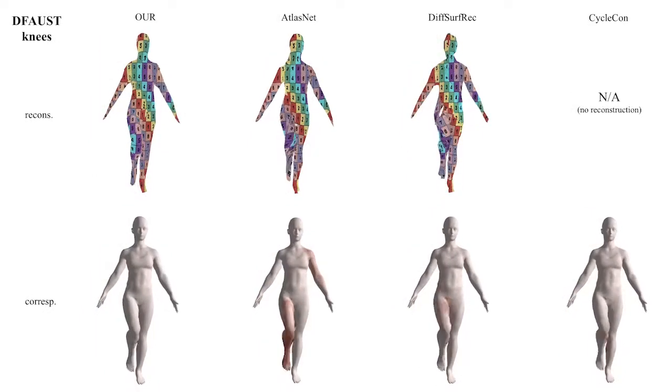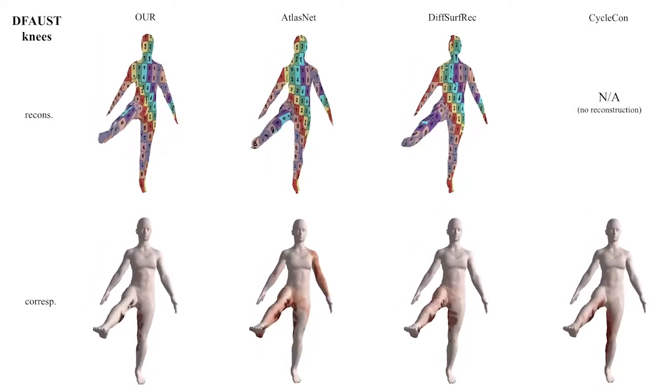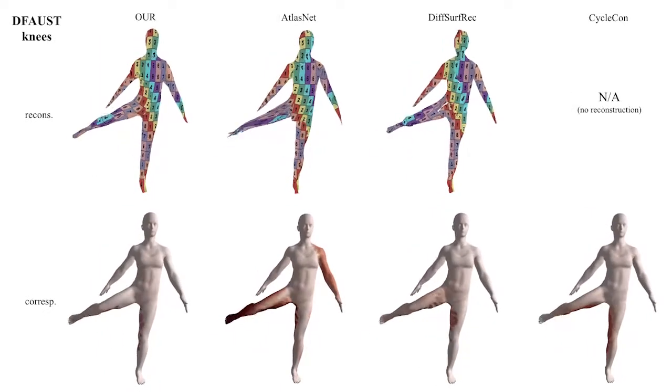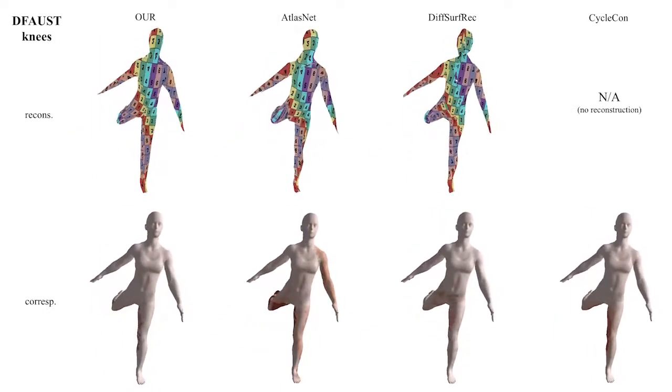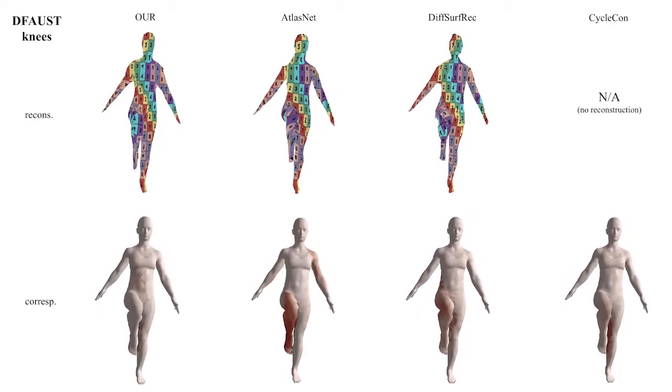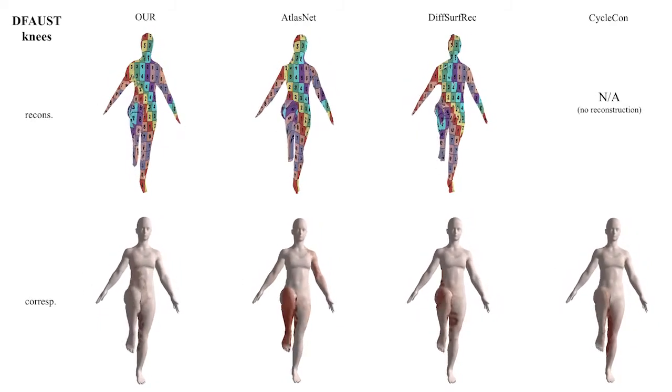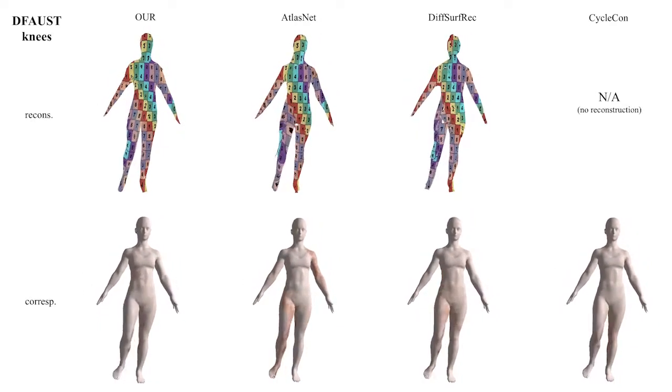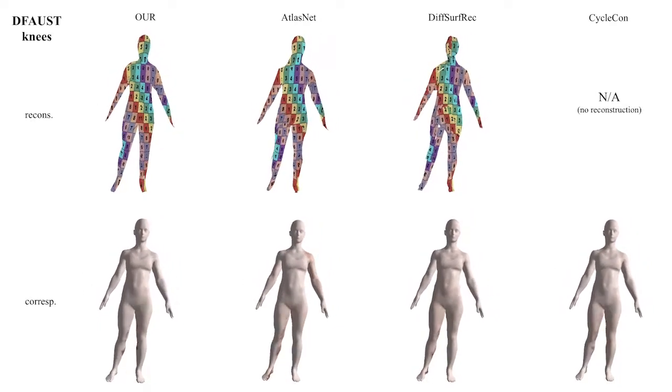In this challenging sequence, focus on the right leg of the human and note the strong surface distortion produced by AtlasNet and the incoherent flickering of DSR.